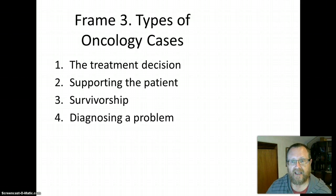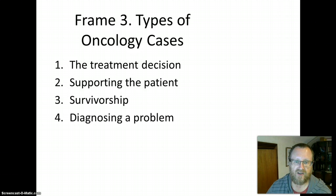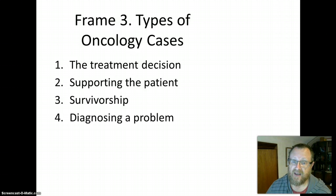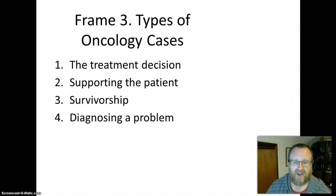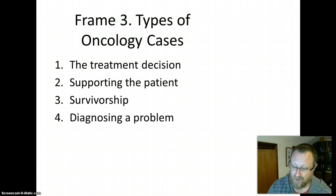Another way of looking at the oncology long case is to consider the different types of cases. Some are about decisions regarding anti-cancer treatment. Some are about supporting the patient through side effects or symptoms. In some cases, treatment has already been given, fitting within a survivorship framework. And the final category involves cases that are really a diagnostic dilemma.